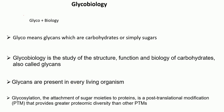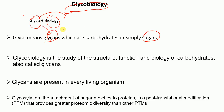In this lecture, I'm going to talk about glycobiology. The word 'glycobiology' comes from two words: 'glyco' and 'biology.' Glyco means sugars, glycans, or carbohydrates, while biology is the study of living things. So glycobiology is the study of the structure, function, and biology of carbohydrates, also called glycans.